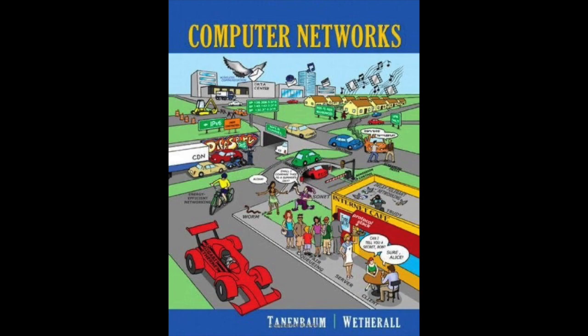Just as there are two types of network service—connection-oriented and connectionless—there are also two types of transport service. The connection-oriented transport service is similar to the connection-oriented network service in many ways. In both cases, connections have three phases: establishment, data transfer, and release. Addressing and flow control are also similar in both layers.